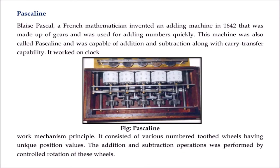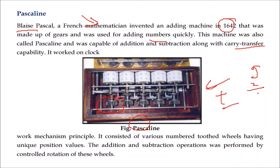Then came the Pascaline. Blaise Pascal was a French mathematician who invented an adding machine in 1642. It consists of gears so that numbers can be added quickly. It was able to add and subtract, and also had a carry transfer capability — if you add 9 with 2, the result is 11, and the 1 is carried over. It worked on the clock principle, consisting of toothed wheels with unique positions, and the addition and subtraction operations are performed by the controlled rotation of these wheels.